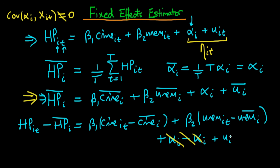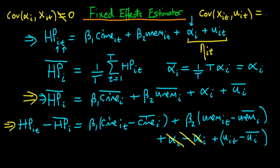The final term we get is the idiosyncratic error minus the time average of the idiosyncratic error. It turns out that because we have done away with the unobserved heterogeneity, under normal assumptions OLS estimates on this equation will be consistent. All we require is that the covariance between our independent variables x_it and our idiosyncratic error u_it is equal to zero. Note we would require this for unbiasedness, but we are quite happy just to deal with consistency.